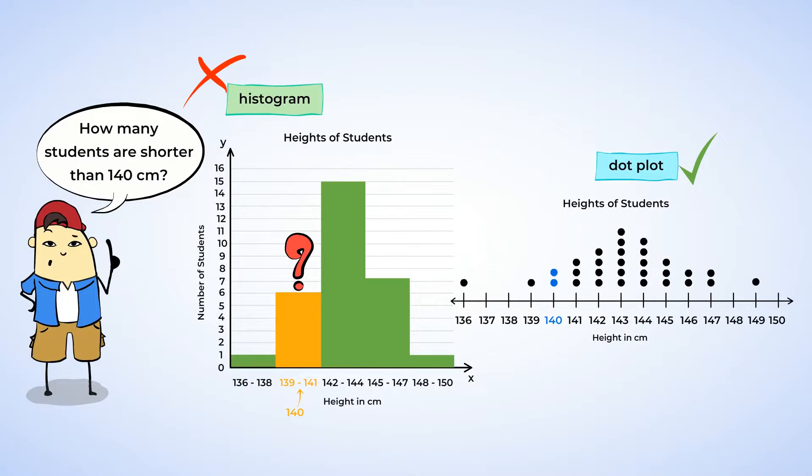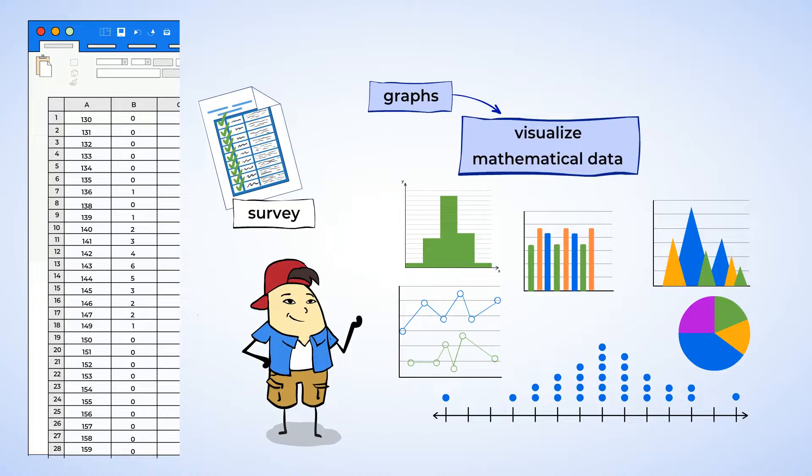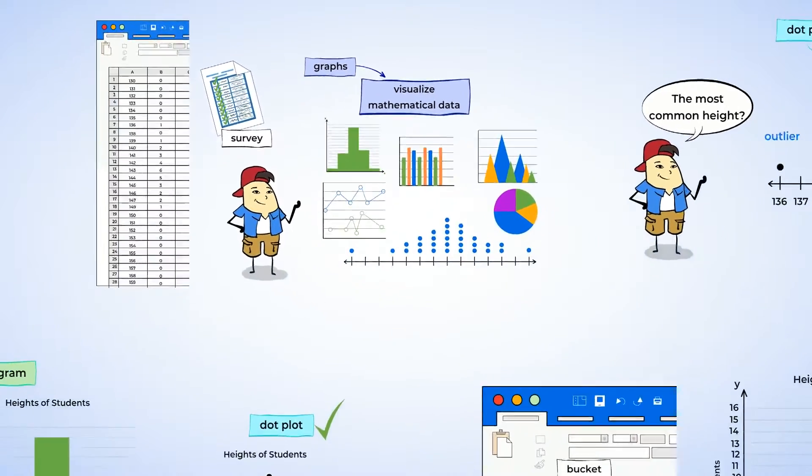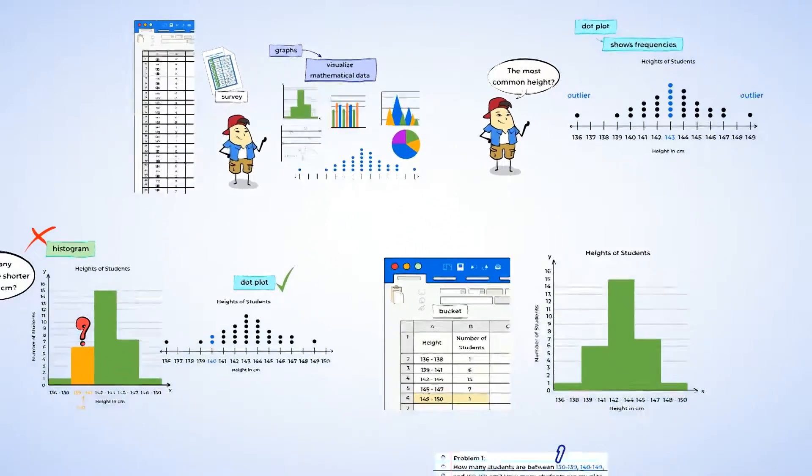Today, we learned two pretty neat ways of showing frequency data, via dot plots and histograms. Using the correct graph to display a set of statistical data or information helps us understand and analyze the data and reveal interesting trends.